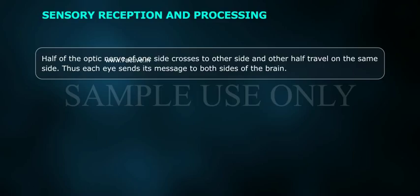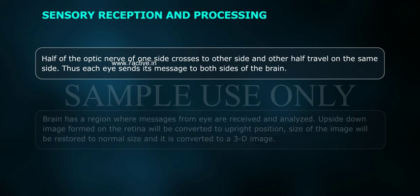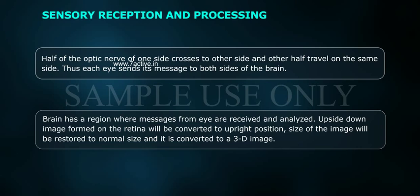The other half of the optic nerve travels on the same side, so each eye sends its messages to both sides of the brain. The brain has a region where messages from the eyes are received and analyzed. The upside-down image formed on the retina is converted to the correct position, the size of the image is restored to normal, and it is converted to a 3D image.